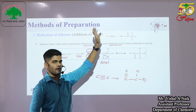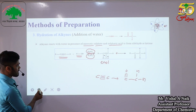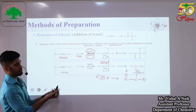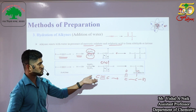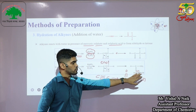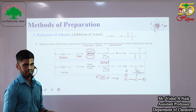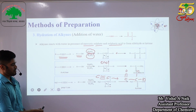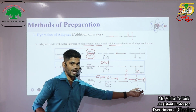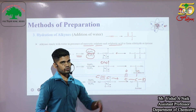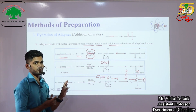In the hydration of alkynes, a C≡C triple bond gets converted into an aldehyde or ketone — one oxygen attaches to a carbon while two hydrogens attach to the other carbon. For example, acetylene reacts with water in the presence of HgSO₄ to give an enol form, which converts to the keto form giving acetaldehyde. Similarly, prop-1-yne gives acetone as a product.